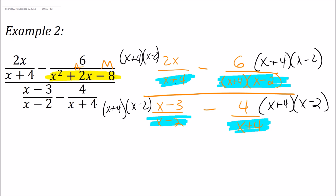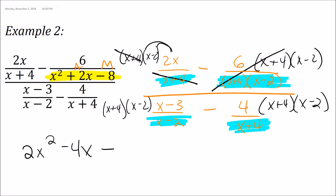For the first term, (x plus 4) over (x plus 4) reduces to 1, so I distribute the 2x and get 2x squared minus 4x. Then (x plus 4) over (x plus 4) is 1 and (x minus 2) over (x minus 2) is 1, so I'm just left with minus 6 on top.